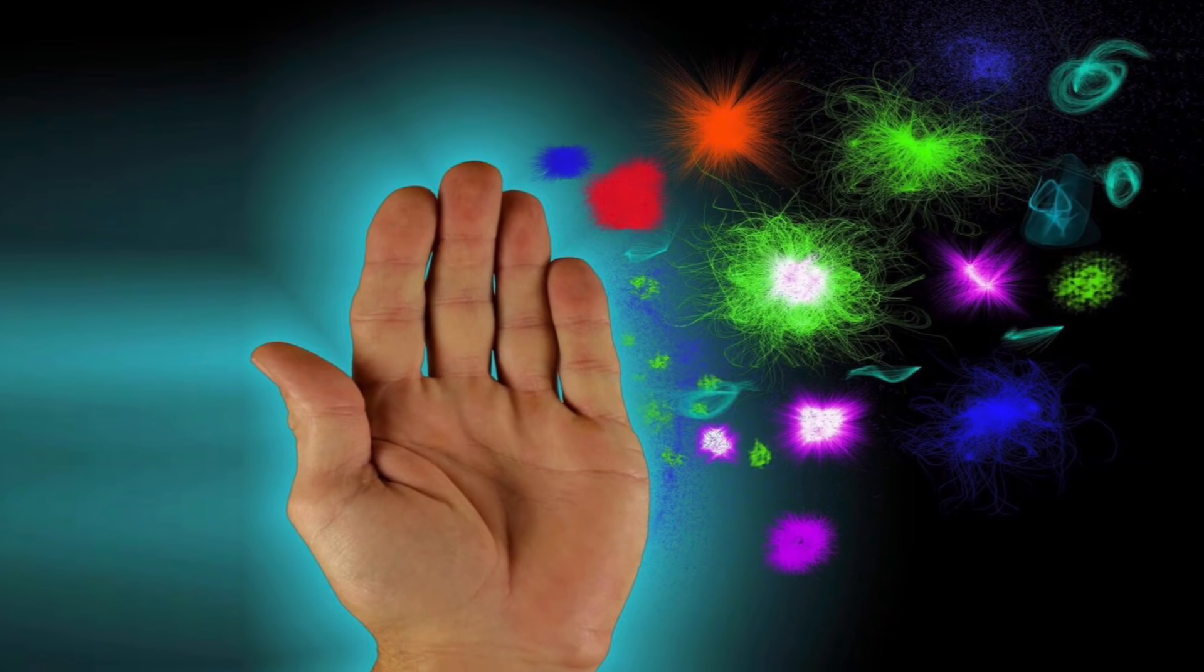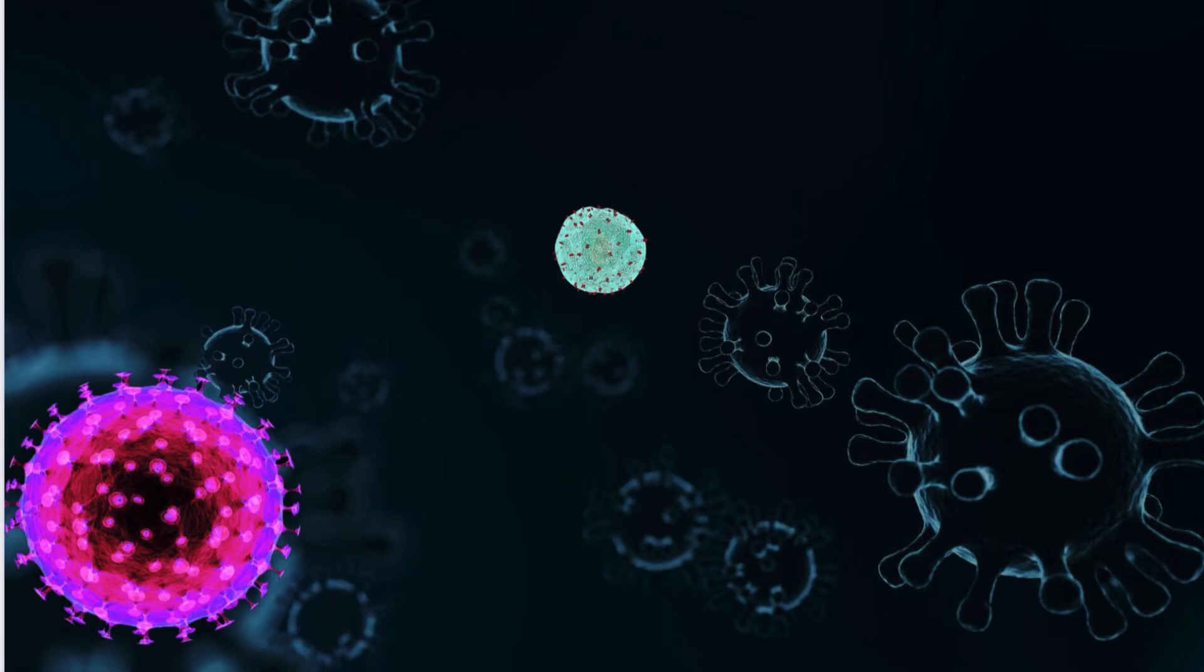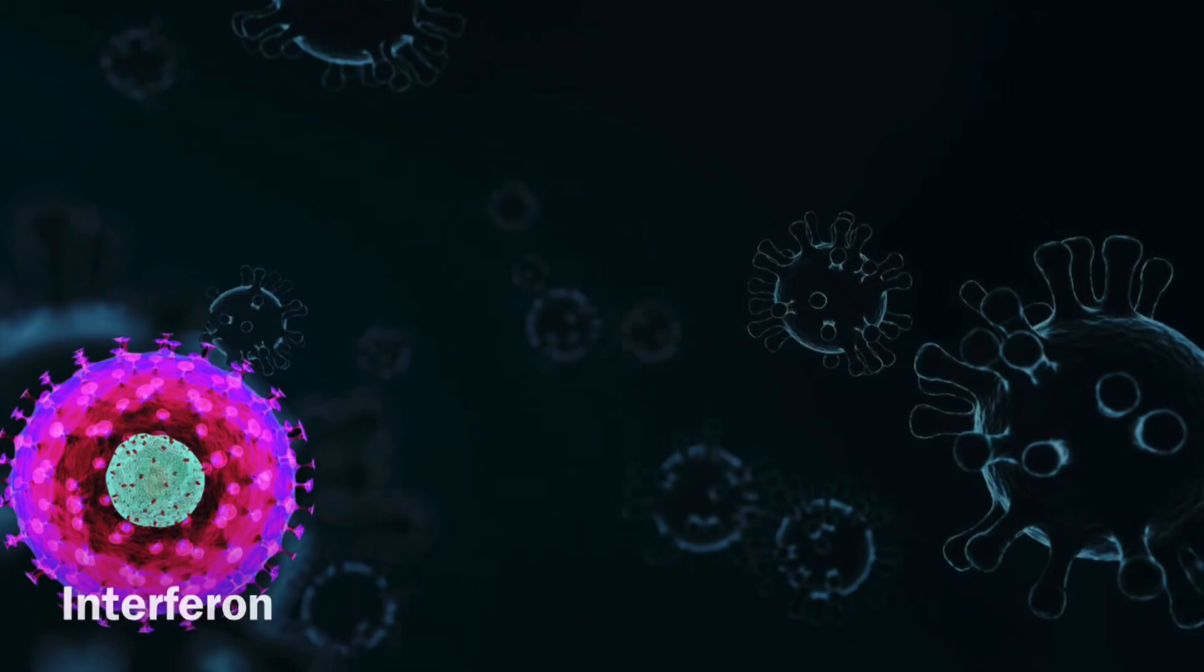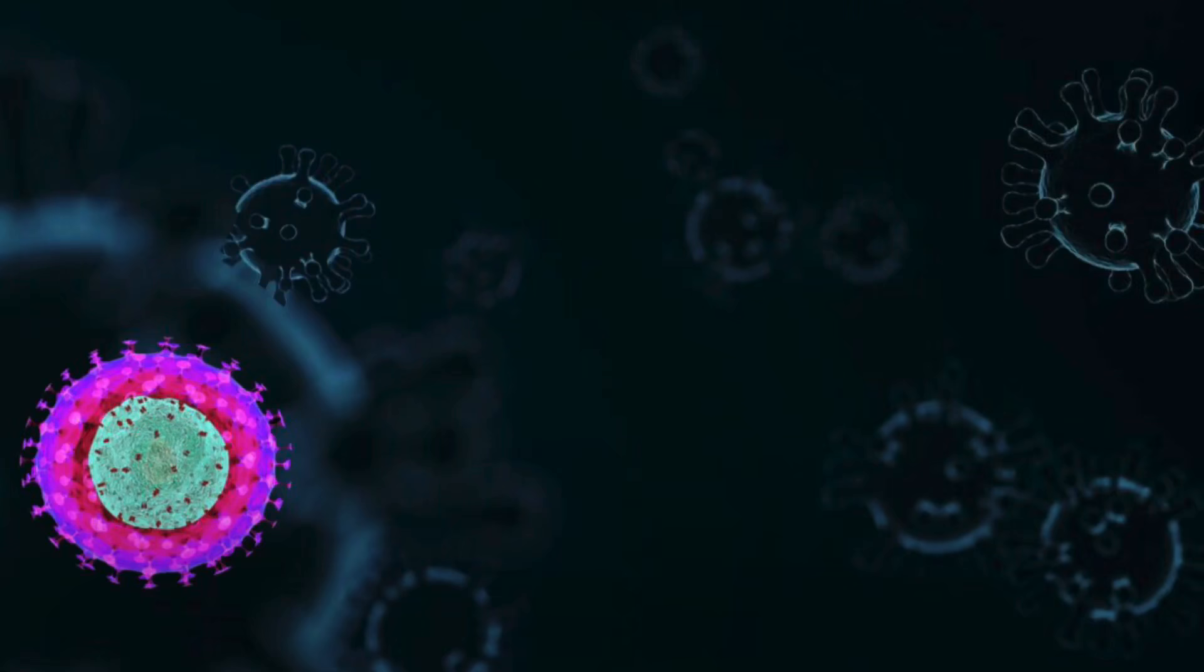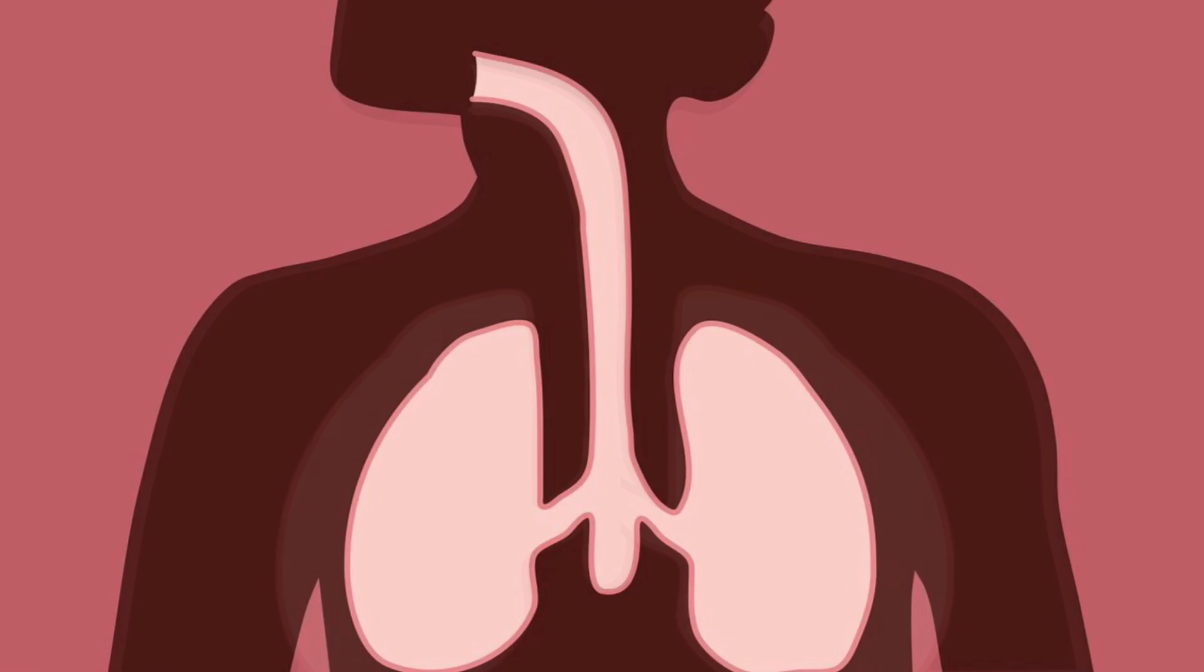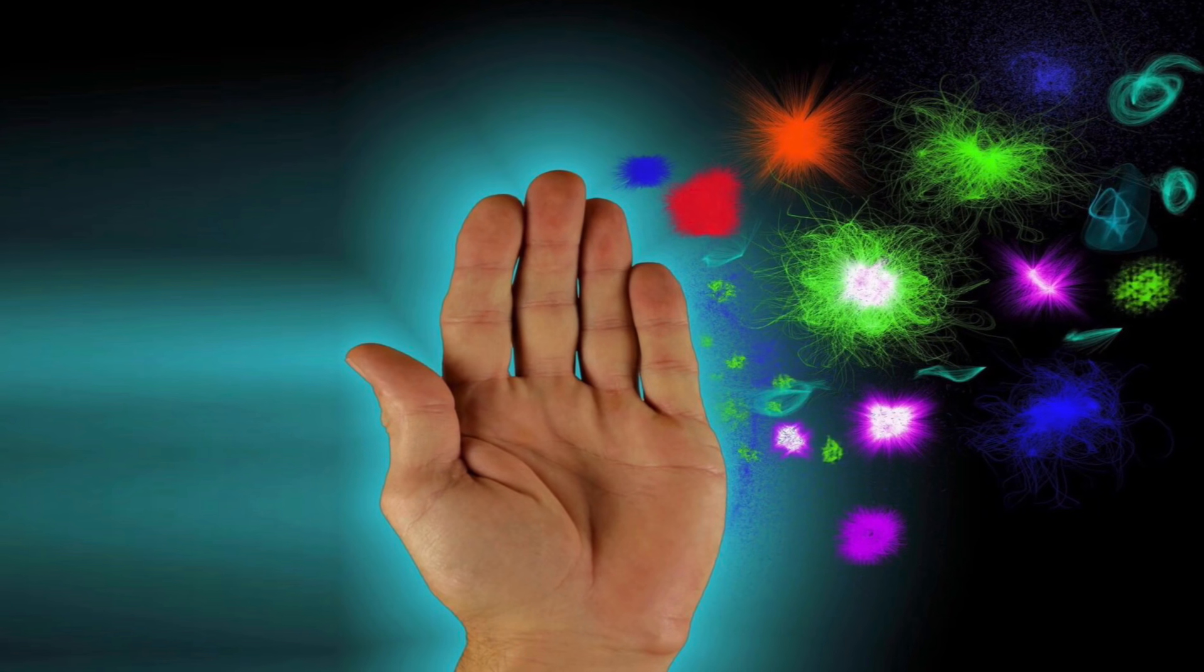Our immune system quickly responds by producing antibodies, enveloping the viruses to cease the attack. Interferons are released to interfere in viral replication, while cytokines are also released to promote inflammation to isolate the invaders. But inflammation can also harm our body. It is a balancing act that our immune system needs to maintain.